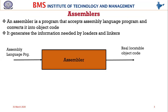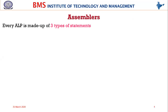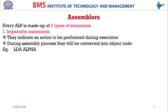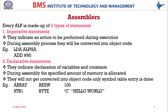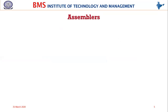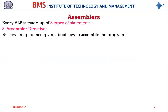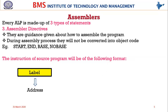An assembler takes the assembly level language program using the machine instruction set and addressing modes, and converts it to object code. Assembly language programs contain three types of statements: imperative statements, which are action-specifying instructions that execute; declarative statements, which reserve space for variables and constants; and assembler directives, which are guidelines to the assembler about how to assemble the program.